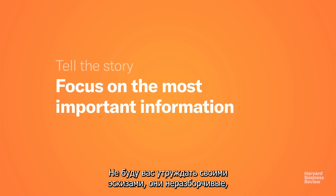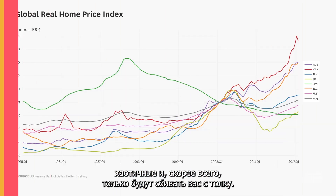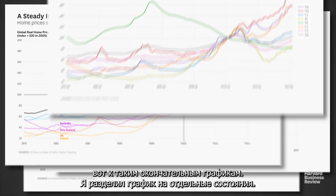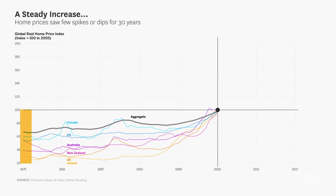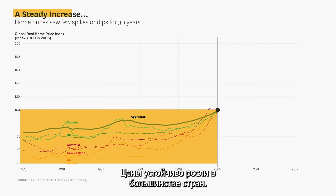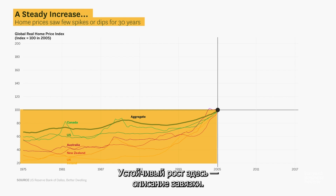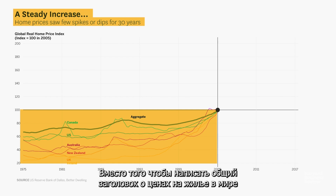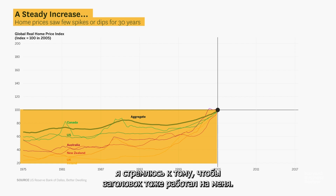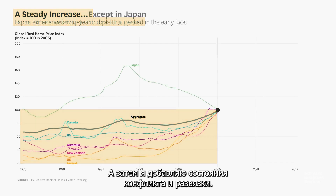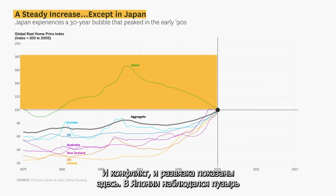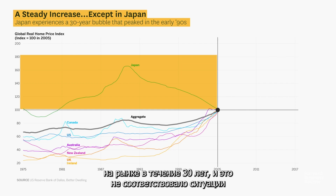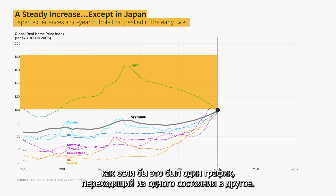I did a bunch of sketching and arrived at these final charts, splitting the chart into a couple of states — it really helps your audience focus. Here is my setup: prices rose steadily in most places in the world. I try to use my titles to actually reflect the story, so the steady increase reflects that setup, instead of just using a generic title about global real home prices. Then I add the conflict and resolution in state two — we've added Japan in the title, and that conflict and resolution becomes clear. Japan was this bubble that lasted 30 years, different than everywhere else. It almost looks seamless, as if I'm just showing you one chart that changes state.